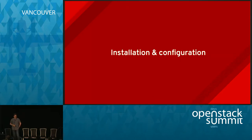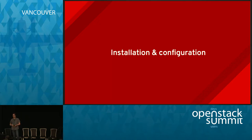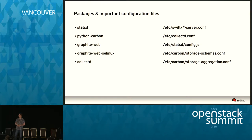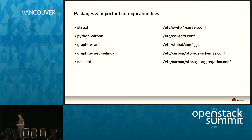Installation and configuration of these tools was a little difficult in the past. StatsD is written in Node.js, Graphite is a Django application, so there are many dependencies. With Red Hat's community distribution Fedora 21, everything you need is packaged already. You only need to install the packages on the left and you have everything to run Graphite and the StatsD instance, making it really simple to get started and try it out in your data center.